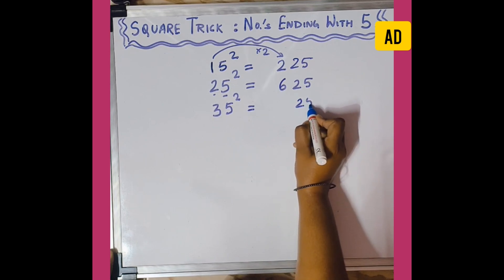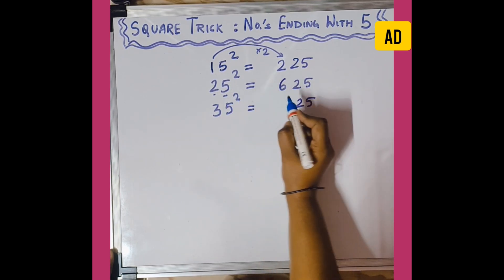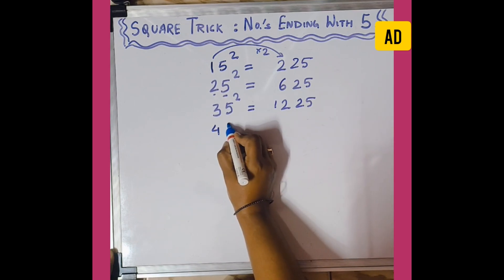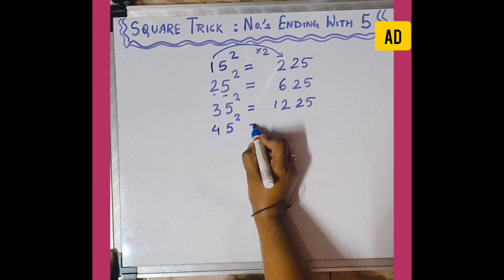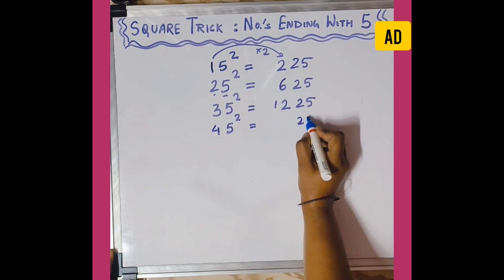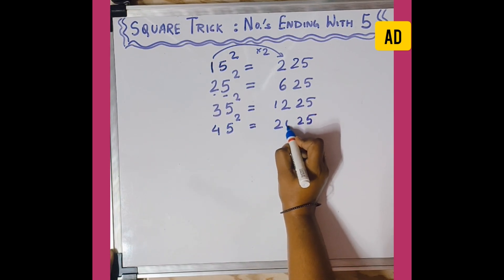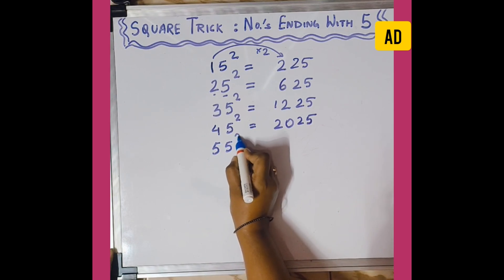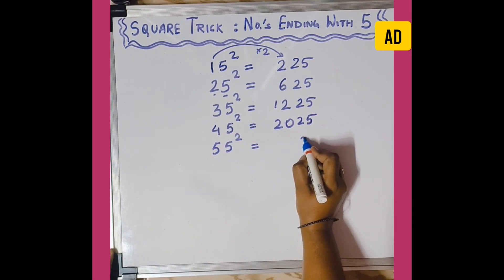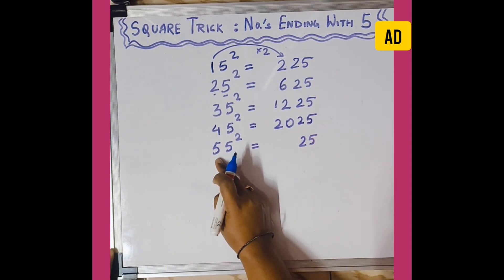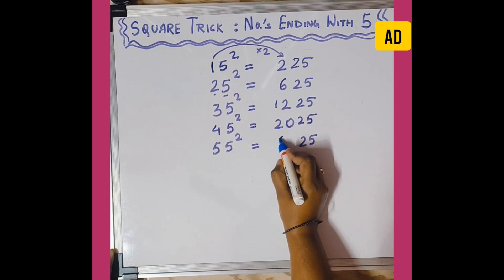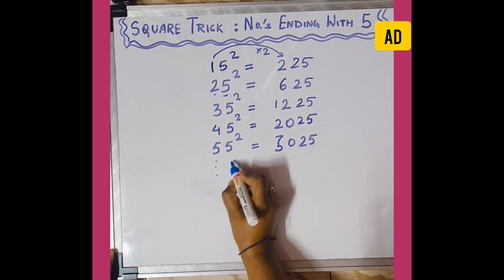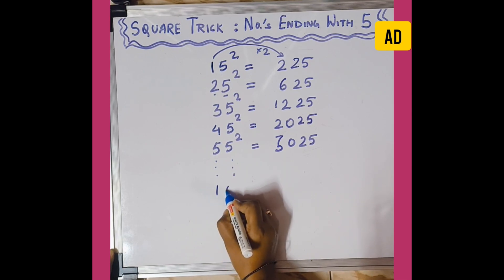Next is 45 squared: again 25, and 4 times 5 is 20, giving us 2025. Next is 55 squared: 5 squared is 25 again, and then 5 into 6 will give us 30, so the number is 3025, and so on.